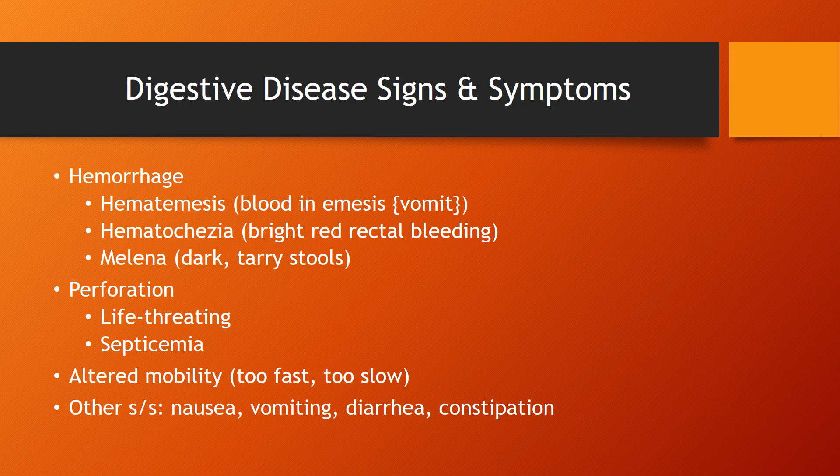Other signs and symptoms include altered motility — things moving too fast or too slow. Our digestive system has what we call peristalsis, which controls how fast we digest and eliminate. Diarrhea is an example of altered motility with things moving too fast, and constipation is an example when things are moving too slow. Two additional signs and symptoms often noted are nausea and vomiting.